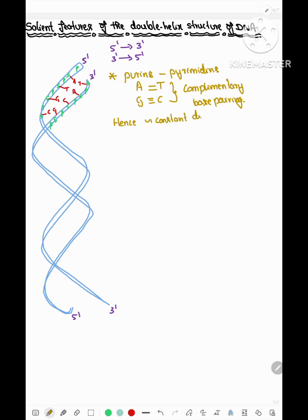Because of the presence of hydrogen bonds throughout the length of DNA, there is a constant distance maintained between the two strands throughout the length of the DNA.